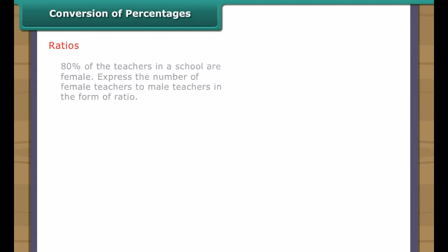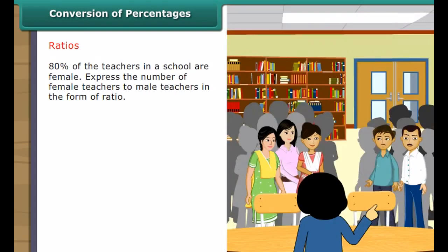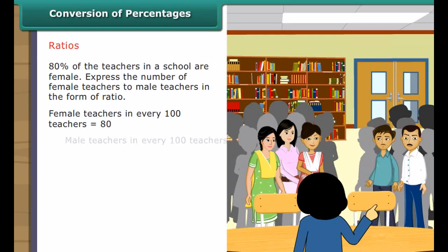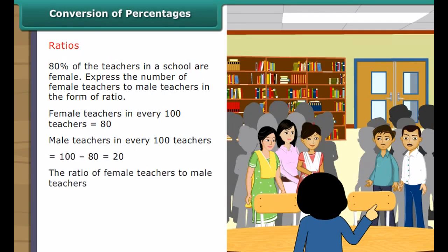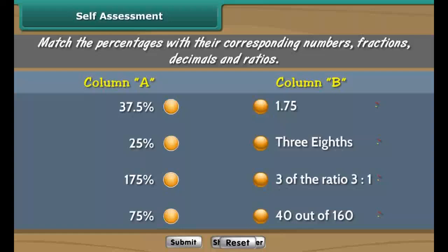Ratios. 80% of the teachers in a school are female. Express the number of female teachers to male teachers in the form of a ratio. Female teachers in every 100 equals 80. Male teachers equals 100 minus 80, which equals 20. The ratio of female to male teachers equals 80 to 20, which equals 4 to 1. Self-assessment: match the percentages with their corresponding numbers, fractions, decimals and ratios.